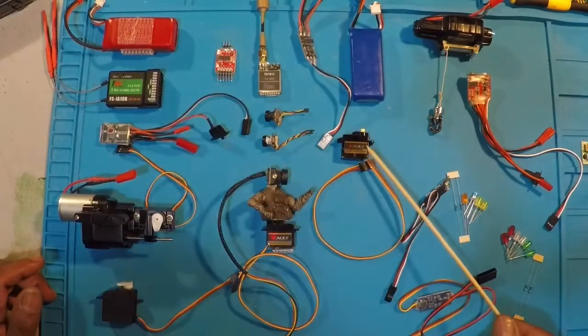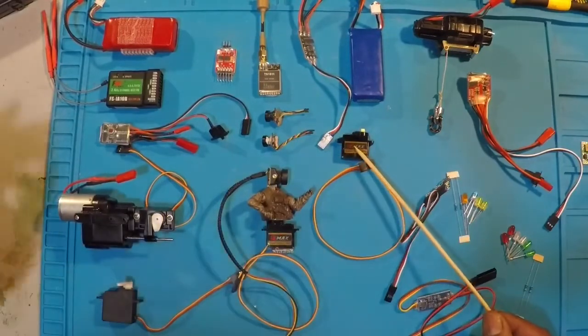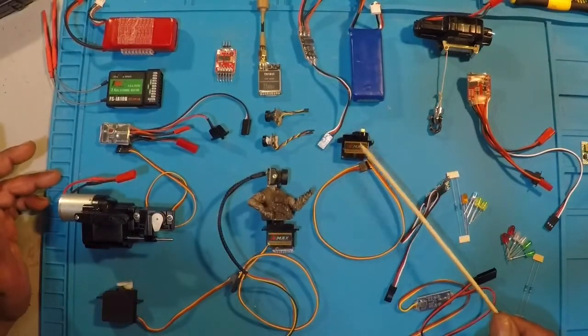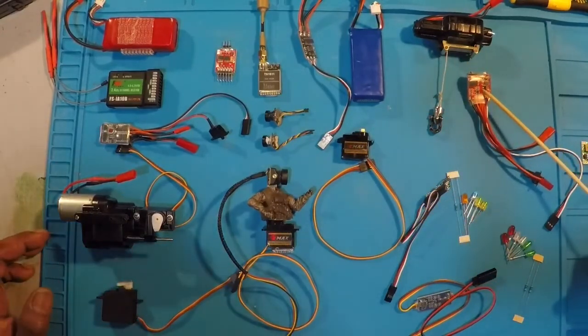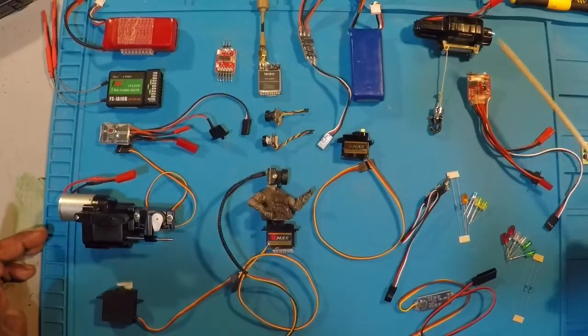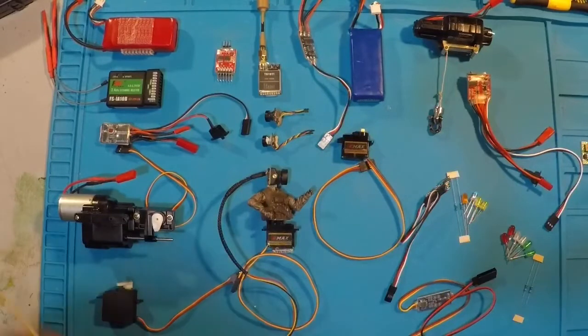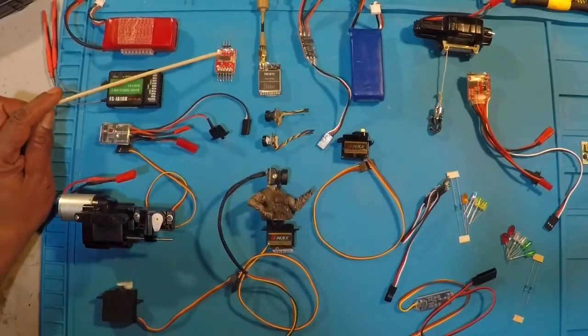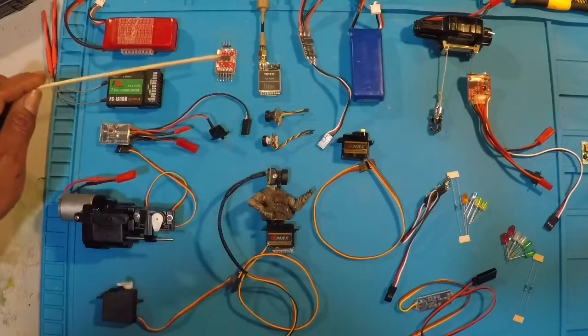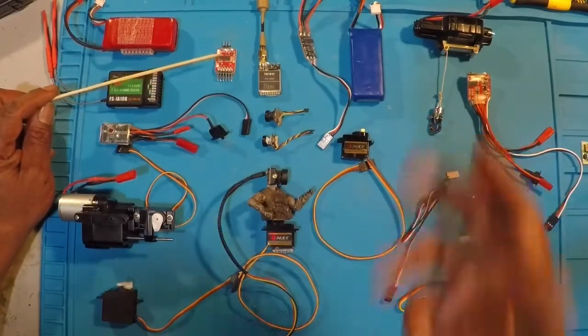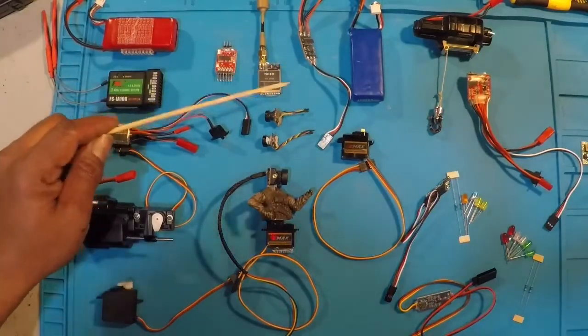On channel four, we're going to have a 360 degree servo with a camera attached to it on the rear of the truck. On channel five, we're going to have a secondary ESC that is going to control our winch. On channel six, we're going to be using our three camera switcher. We're going to have a FPV system of three cameras. And this component is going to allow us to switch between the three views and then send the output signal to our transmitter.